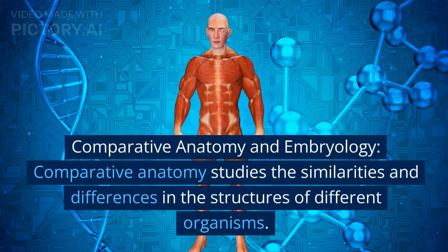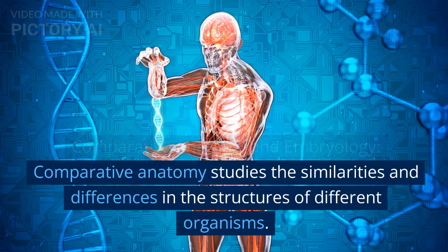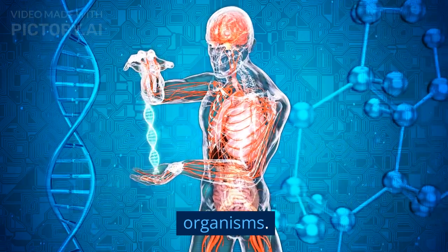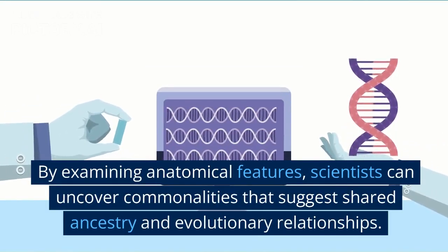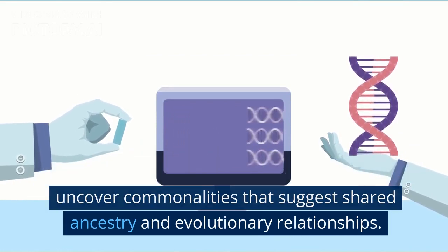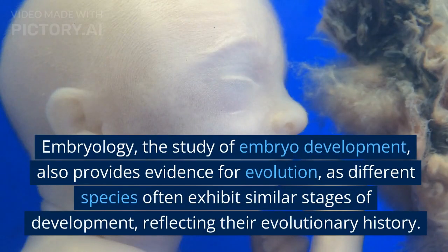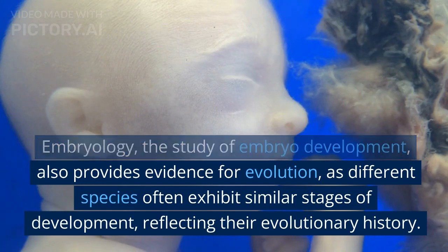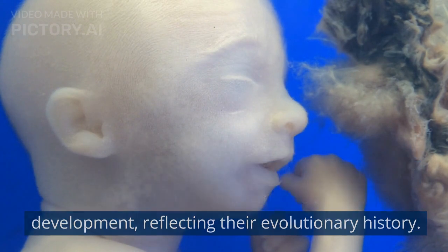Comparative Anatomy and Embryology. Comparative anatomy studies the similarities and differences in the structures of different organisms. By examining anatomical features, scientists can uncover commonalities that suggest shared ancestry and evolutionary relationships. Embryology, the study of embryo development, also provides evidence for evolution, as different species often exhibit similar stages of development, reflecting their evolutionary history.